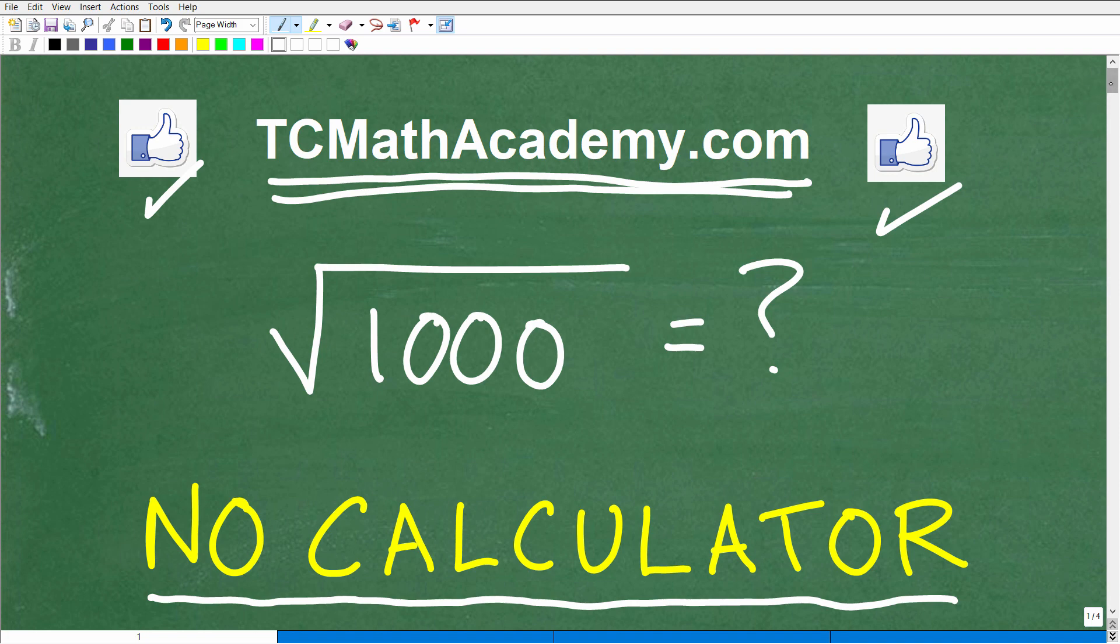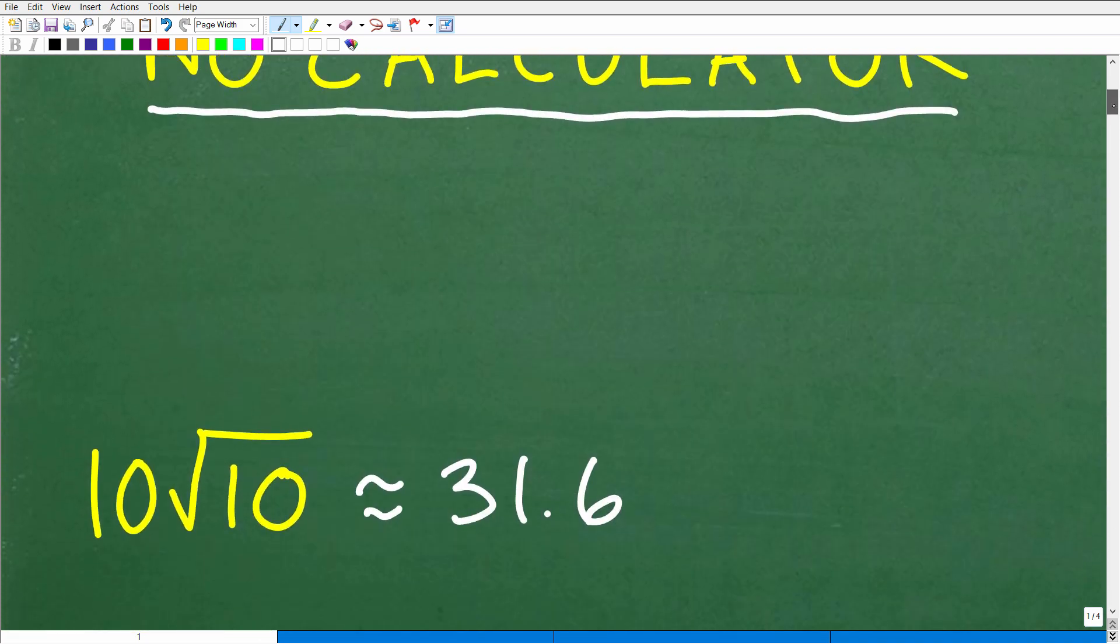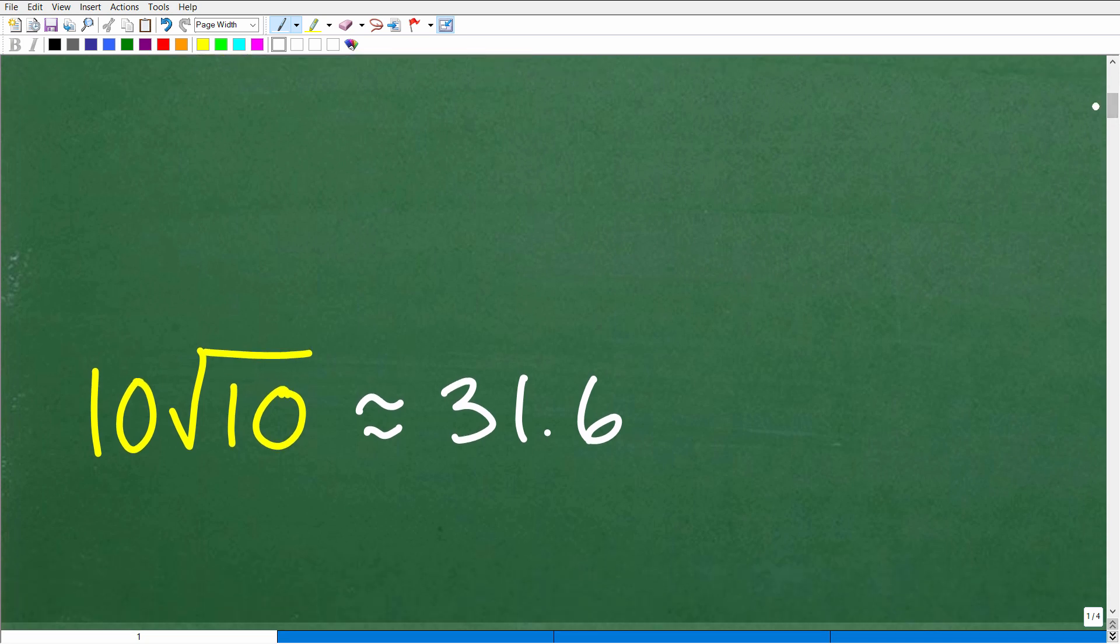All right, so let's go ahead and take a look at the square root of 1,000. And here are the answers that hopefully you came up with. So the square root of 1,000 is exactly equal to 10 times the square root of 10. And that's approximately the decimal 31.6.